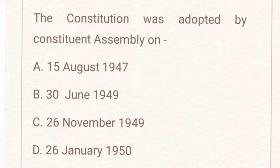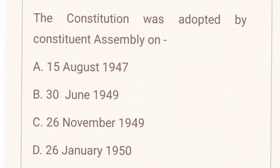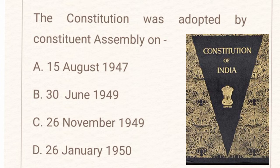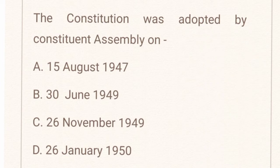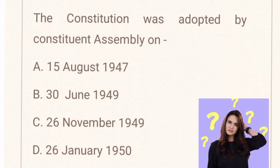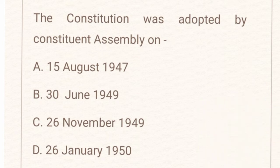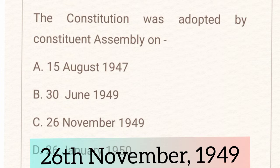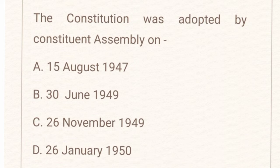The next question is: the Constitution was adopted by the Constituent Assembly on which date? Options are 15th August 1947, 30th June 1949, 26th November 1949, or 26th January 1950. You might be confused between 26th November 1949 and 26th January 1950. The correct answer is 26th November 1949 — the Constitution was adopted and enacted by the Constituent Assembly at its 11th session on 26th November 1949, and it came into effect from 26th January 1950. The correct option is C.